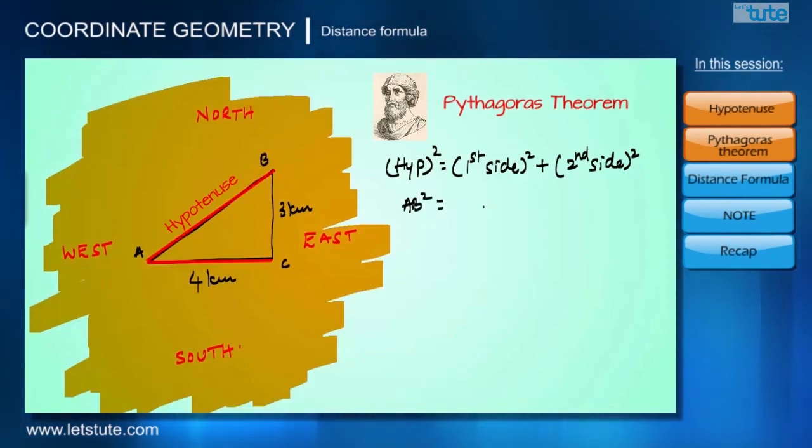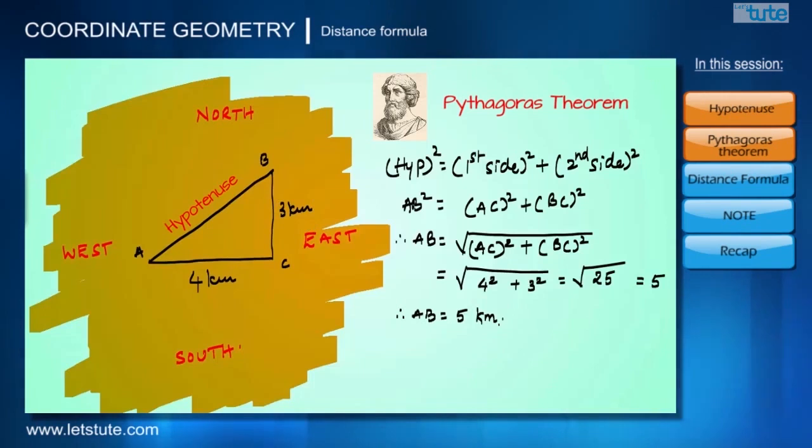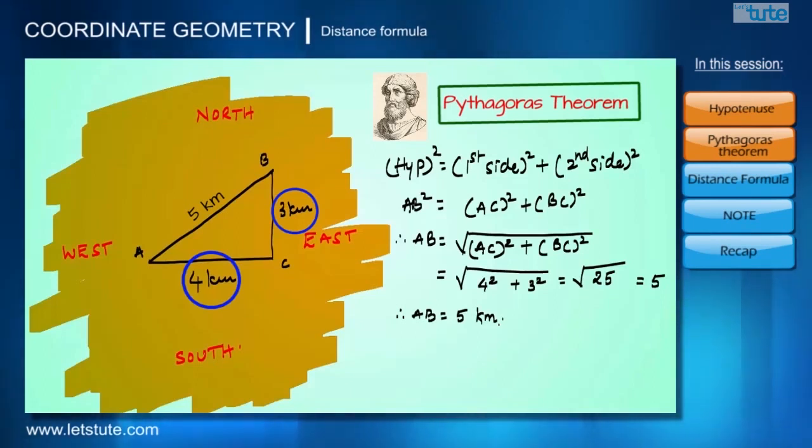So in our case, hypotenuse is AB and remaining two sides are AC and BC. So this can be written as AB equals square root of AC squared plus BC squared. We know the values for AC and BC, so on putting those values we get AB as five kilometers. Here we see that for finding distance between two towns we use Pythagoras theorem because we were knowing absolute distances.